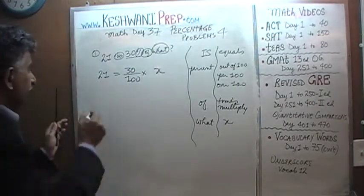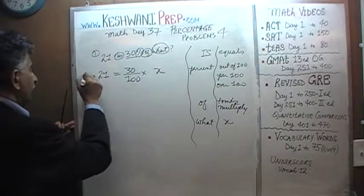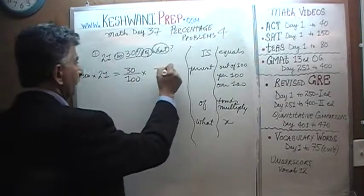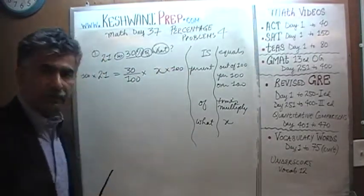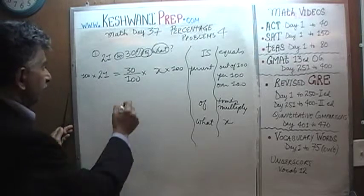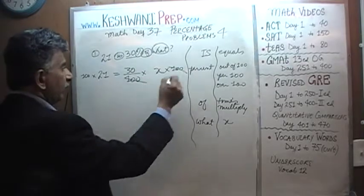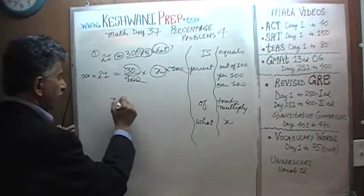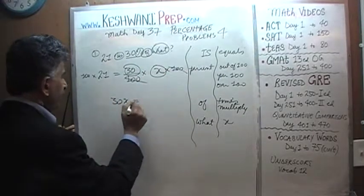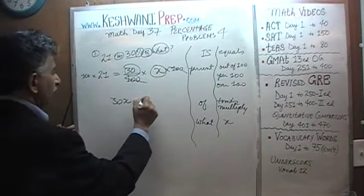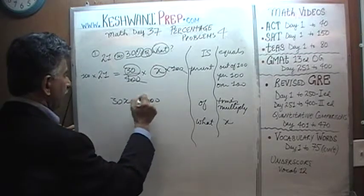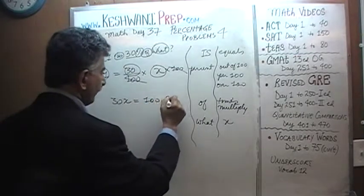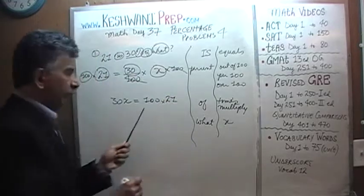Let's get rid of the 100 from the bottom here by multiplying both sides of the equation by 100. We can cancel that 100, and we end up with 30 times x. So 30x equals 100 times 21.